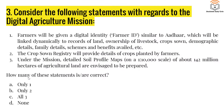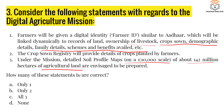Next question, number three: consider the following statements with regards to the Digital Agriculture Mission. One — farmers will be given a digital identity called Farmer ID, similar to Aadhaar, which will be linked dynamically to records of land ownership, livestock, crops sown, demographic details, family details, and schemes/benefits availed. Two — the crop sown registry will provide details of crops planted by farmers. Three — under the mission, detailed soil profile maps on a scale of 1:10,000 of about 142 million hectares of agricultural land are to be prepared. How many are correct?